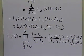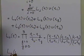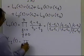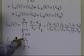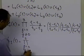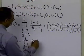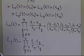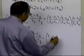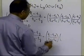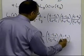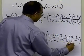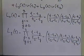Similarly, L1(t) is the product from j=0 to 3 with j ≠ 1 of (t − t_j)/(t1 − t_j). Expanding: [(t − t0)/(t1 − t0)] · [(t − t2)/(t1 − t2)] · [(t − t3)/(t1 − t3)]. That is what L1(t) is.